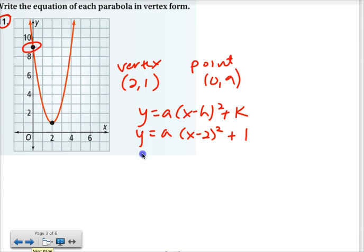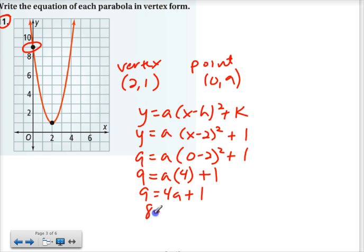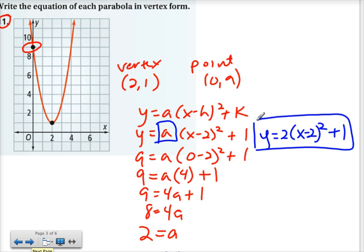So I want to use the point 0, 9. And that's an x and a y. So I'll put the 9 in for y and the 0 in for x. Then I'll do the math, following the order of operations, and that will give me a. So 9 equals a times, well, 0 minus 2 is negative 2, and negative 2 squared is 4. So we really have 9 equals 4a plus 1. We would subtract 1 from both sides and divide by 4. And our a value is 2. And that was the one remaining thing that we still needed back here. So now we can replace that with a 2. And it will be y equals 2 times the quantity x minus 2 squared plus 1.